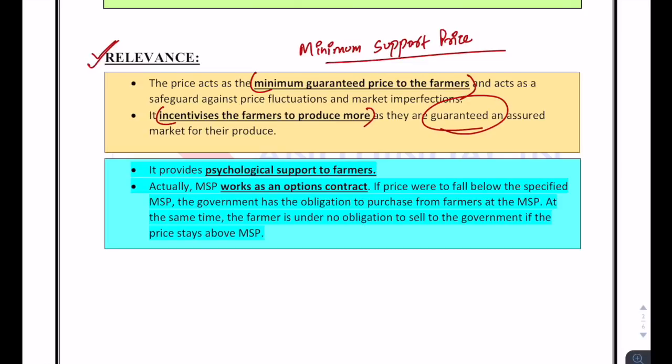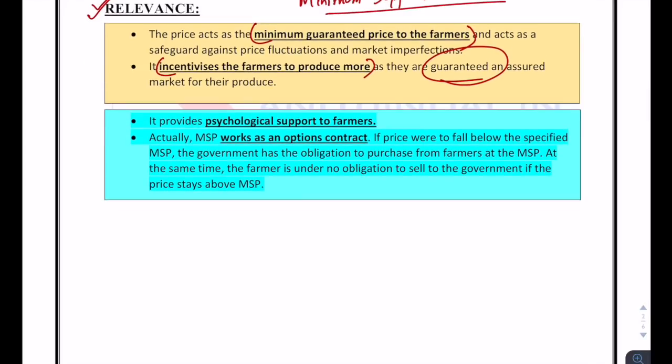MSP incentivizes farmers to produce more because they are guaranteed an assured market for their produce. As an analogy: if Mahindra starts producing electric vehicles and the government says it will buy 1 lakh vehicles to provide to taxi drivers, Mahindra is very happy because they have a guaranteed buyer. They will be incentivized to produce more, creating a positive cycle where more electric vehicles on the road incentivize more consumers to buy directly. Similarly, MSP guarantees farmers a market.